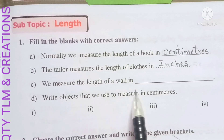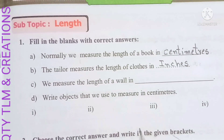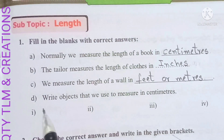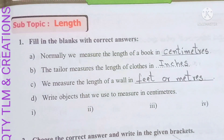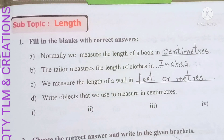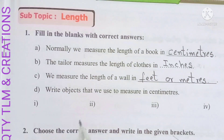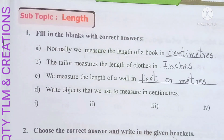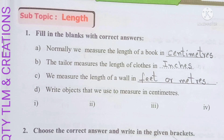Next, we measure the length of a wall in feet or meters. Next, write objects that we use to measure in centimeters: length of a tile, length of a brick, length of a table, length of a pen, length of a scale, length of a geometry box, etc.